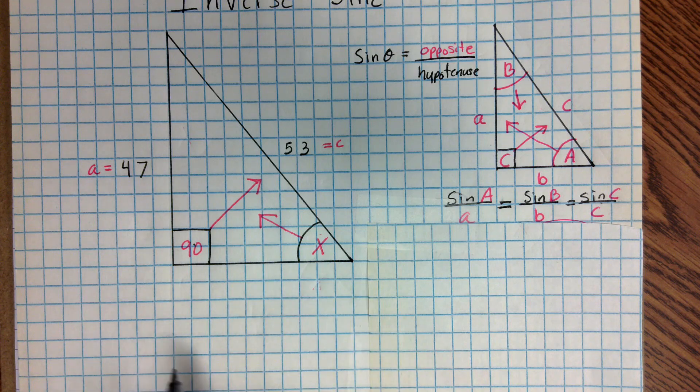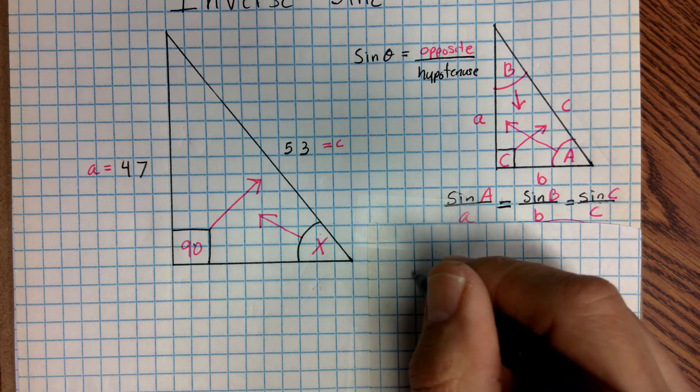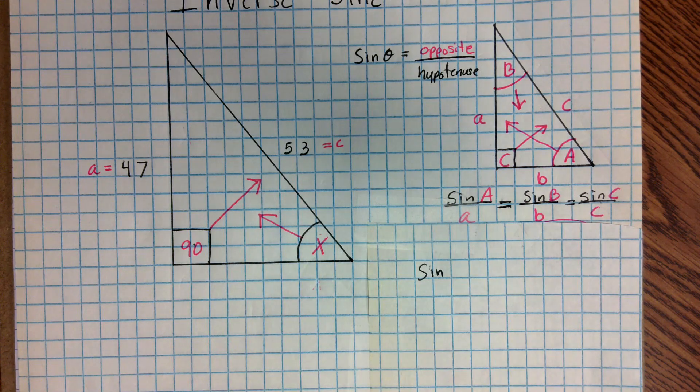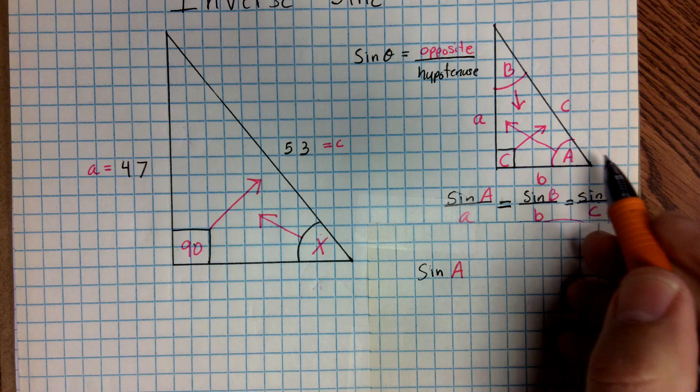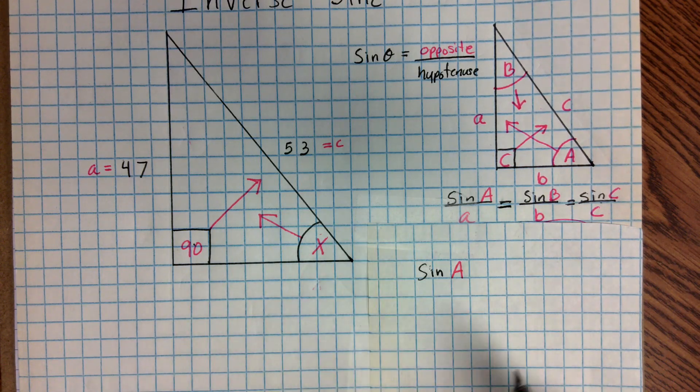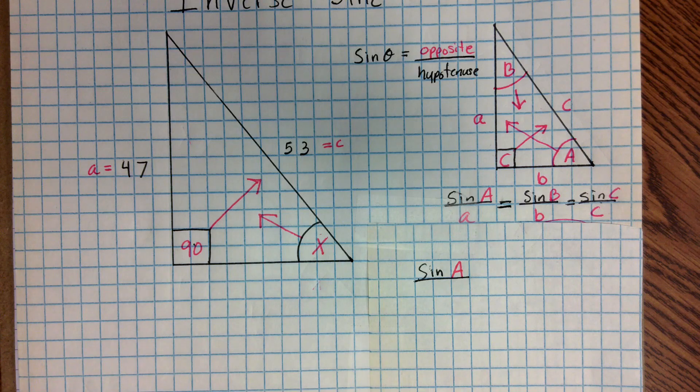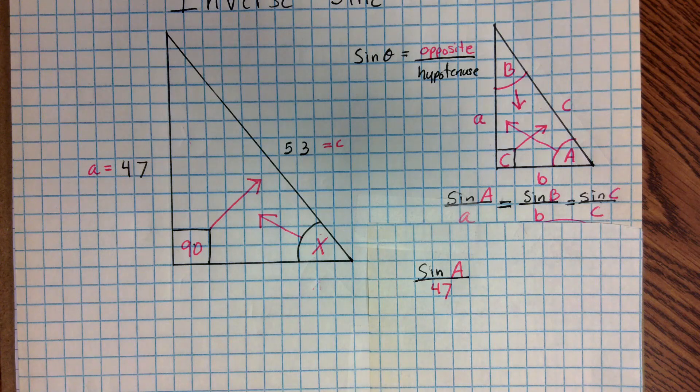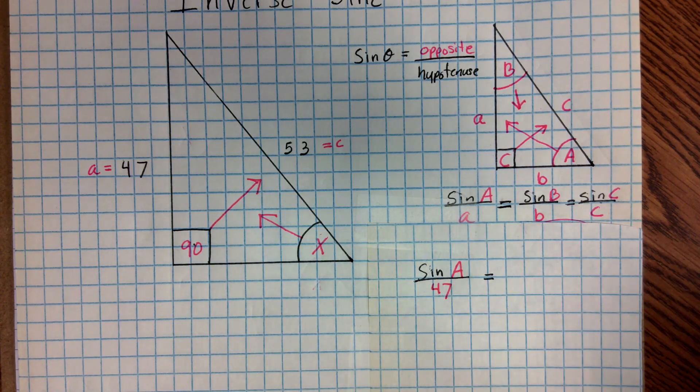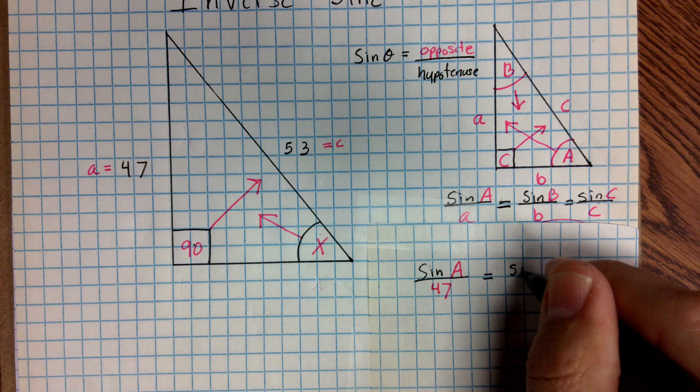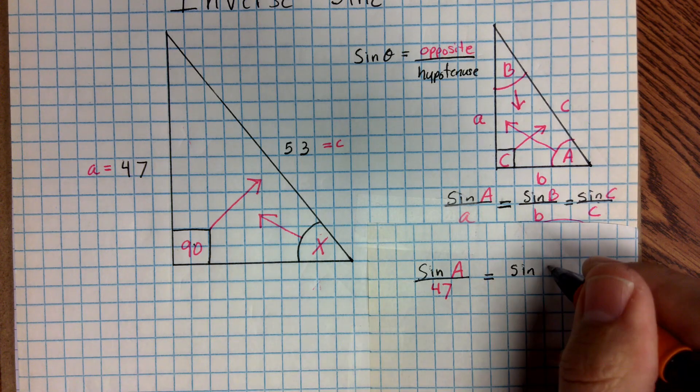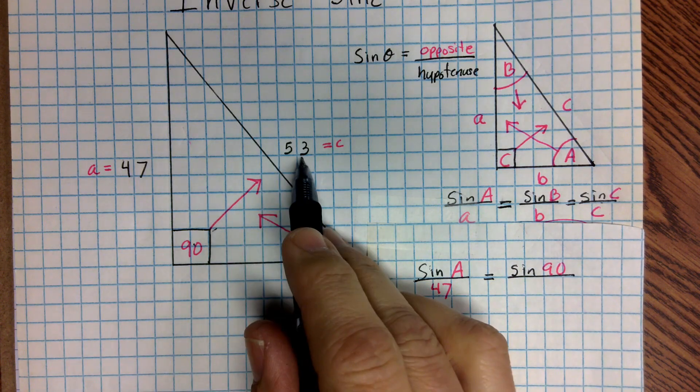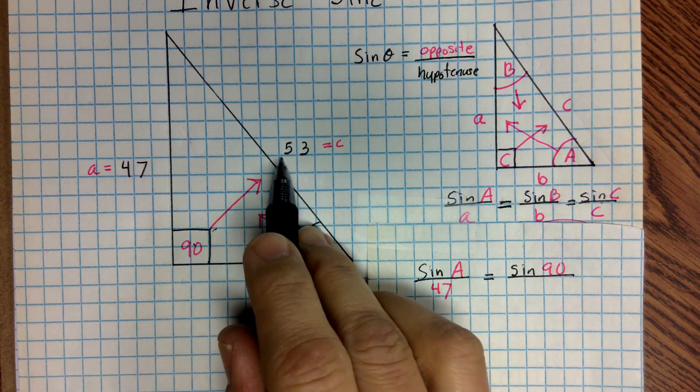So I'm going to go ahead and I'm going to start with the side that I'm looking for. I'm going to call that sine A. So I'm going to write sine A, because I like to call the angle on the bottom right sine A. That's going to be my A over the side length of A, which is 47. And that's going to be equal to sine C, which is 90. So sine 90 over this side opposing it, opposite it, which is 53.